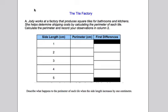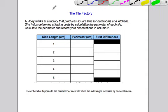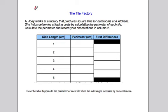Now this question: Jody works at a factory that produces square tiles, and what we're going to do is just draw a diagram — sketch a diagram of a square here. If the square has side length 1, that means each side is 1, then the perimeter is going to be 1 plus 1 plus 1 plus 1, so the perimeter will be 4.